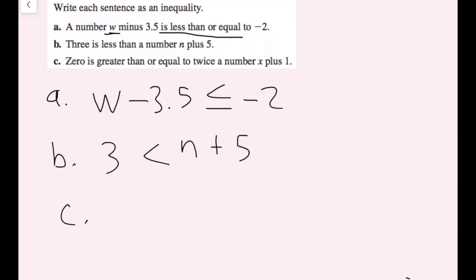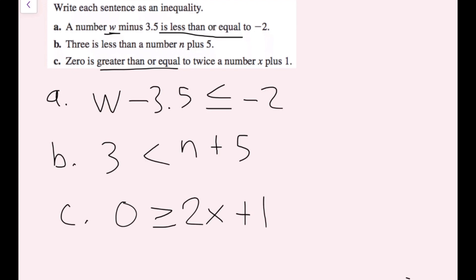For part C, we have '0 is greater than or equal to twice a number x plus 1.' So we start with 0, then greater than or equal to — the symbol pointing to the right with a line underneath. 'Twice a number x' means double, or times 2, so 2x, and then plus 1. So now we have written our inequalities.